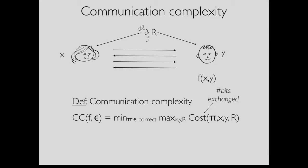In communication complexity, we have two players who each have part of the input and they want to solve some function or problem that depends on both inputs. We define communication complexity as the smallest amount of information they have to exchange in the worst case in order to solve this with some error probability up to an epsilon fraction. In the standard model, correctness is required for all inputs x, y — for every x, y you should have correctness at least 1 minus epsilon.